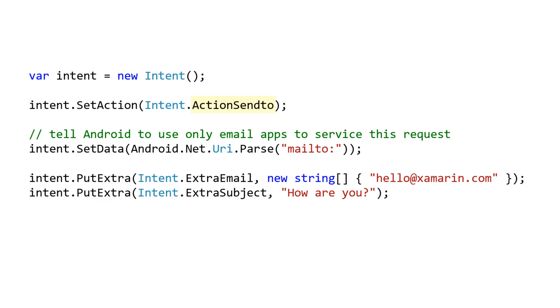Note that ActionSendTo matches multiple activities — email, messaging, etc. The data is MailTo, to ask Android to select an email activity and ignore other activities that also match ActionSendTo such as messaging.